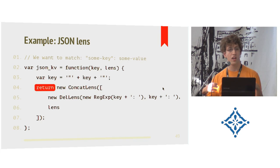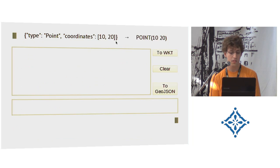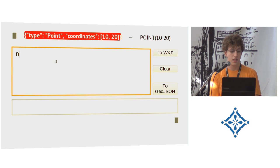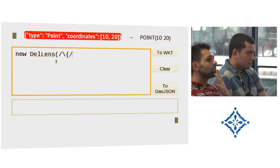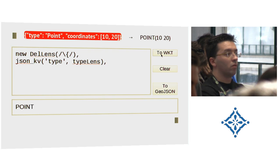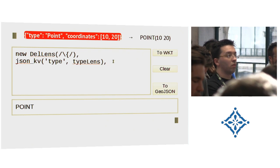Now we get back to the full example. We want to transform the whole thing. Again, we start with a - no, this time we start with a del lens because we don't need the leading curly bracket. Then we use this nice function we've created, json_kv, and it takes the key as an input which is type, and it takes a lens. I've prepared it a bit, so the lens was stored in a variable called type lens. This is basically the point thing I showed at the beginning. And we can already check it if it works. So far it works. It just deleted the JSON stuff and it works.